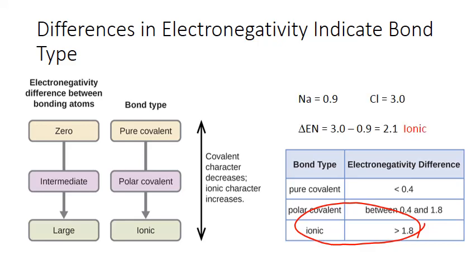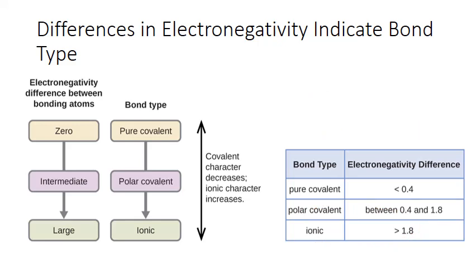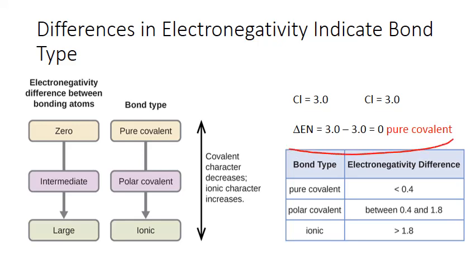For example, sodium has an electronegativity of 0.9 while chlorine is 3.0. Chlorine pulls the electrons completely towards itself away from the sodium, and the bond is ionic. Two atoms of chlorine, on the other hand, when they share electrons between them, have a zero difference in electronegativity. As a result, both chlorine atoms are pulling with equal strength on those shared electrons, meaning the electrons are shared equally — and we have what we call a pure covalent bond.